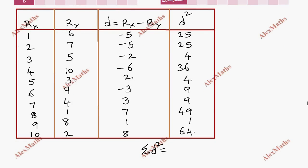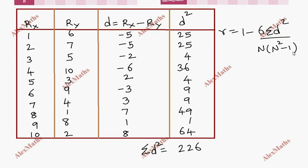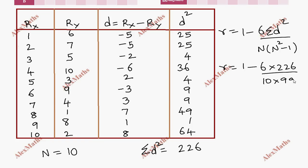The sigma d squared total is 226. The rank correlation formula is: r = 1 minus 6 times sigma d squared, divided by n times (n squared minus 1). The total number n is 10. So we get 1 minus 6 into 226, divided by 10 into (100 minus 1), which is 10 into 99.